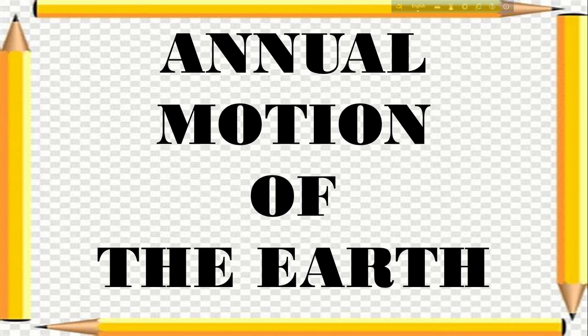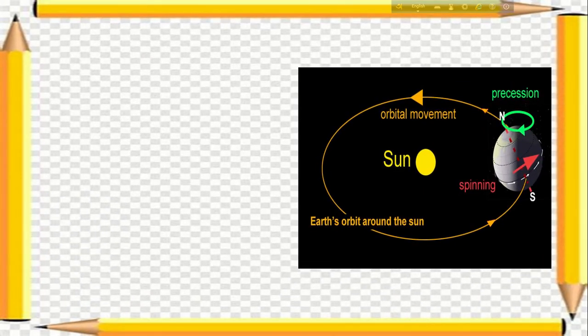The earth takes 365 days and 6 hours to move around the sun in its own orbit. The period the earth takes to complete one revolution is known as the solar year, or simply, year. The definition of annual motion is that the earth takes 365 days, 5 hours, 48 minutes and 47 seconds to move around the sun in its orbit. This motion of the earth is known as the annual motion.